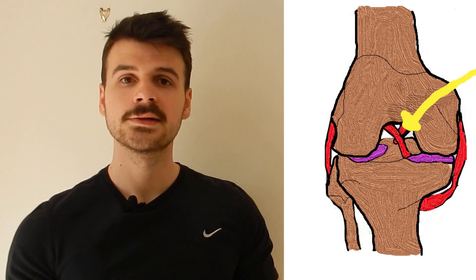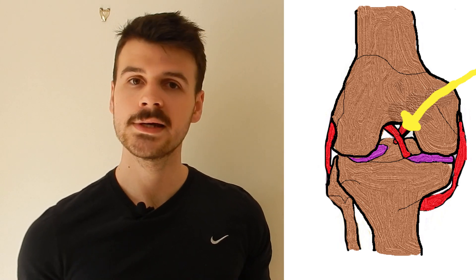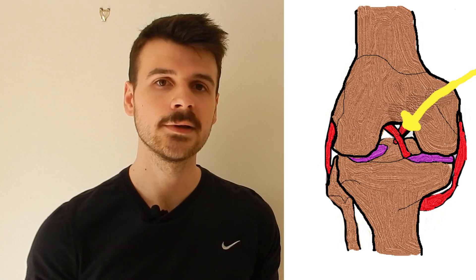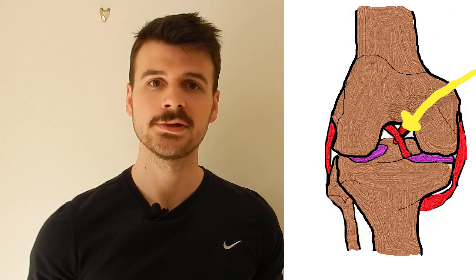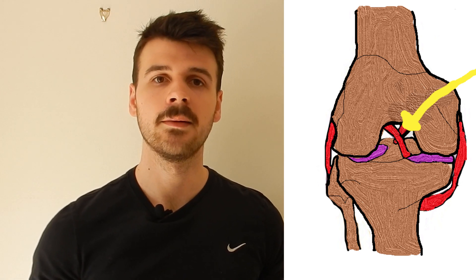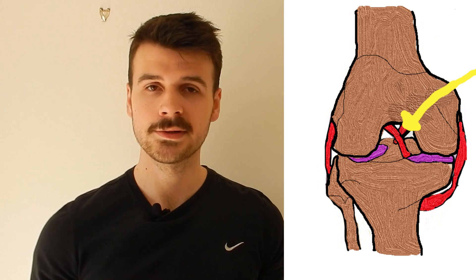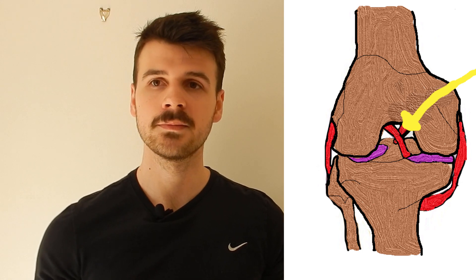We're going to move on to the anatomy now and use this diagram. This is a right knee — you can tell that because the fibula is always lateral. You can see the posterior cruciate ligament marked with the arrow. You can tell this is the posterior cruciate ligament because the two ligaments form a cross, hence cruciate.